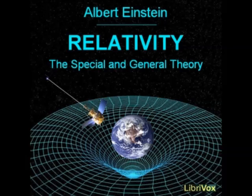A similar difficulty presents itself when we attempt to apply our earlier definition of simultaneity in such a case. Moreover, at this stage, the definition of the space coordinates also presents insurmountable difficulties. If the observer applies his standard measuring rod — a rod which is short as compared with the radius of the disk — tangentially to the edge of the disk, then, as judged from the Galilean system, the length of this rod will be less than 1, since, according to section 12, moving bodies suffer a shortening in the direction of the motion.